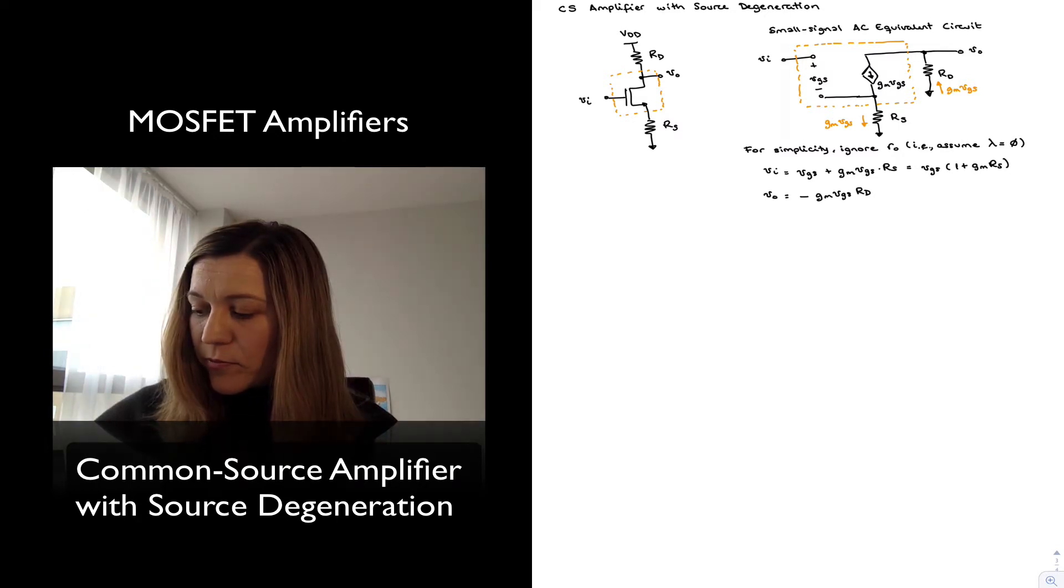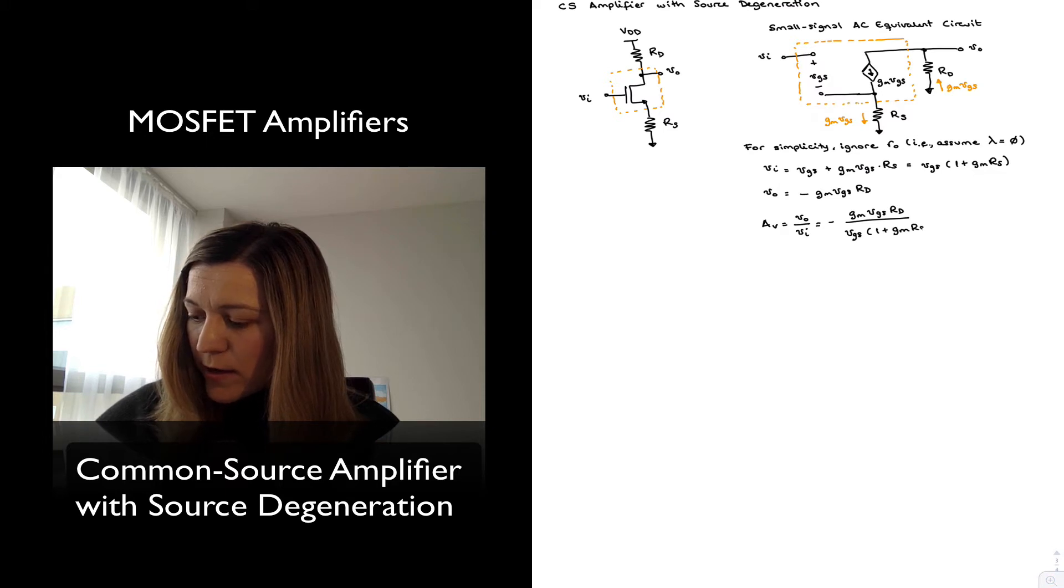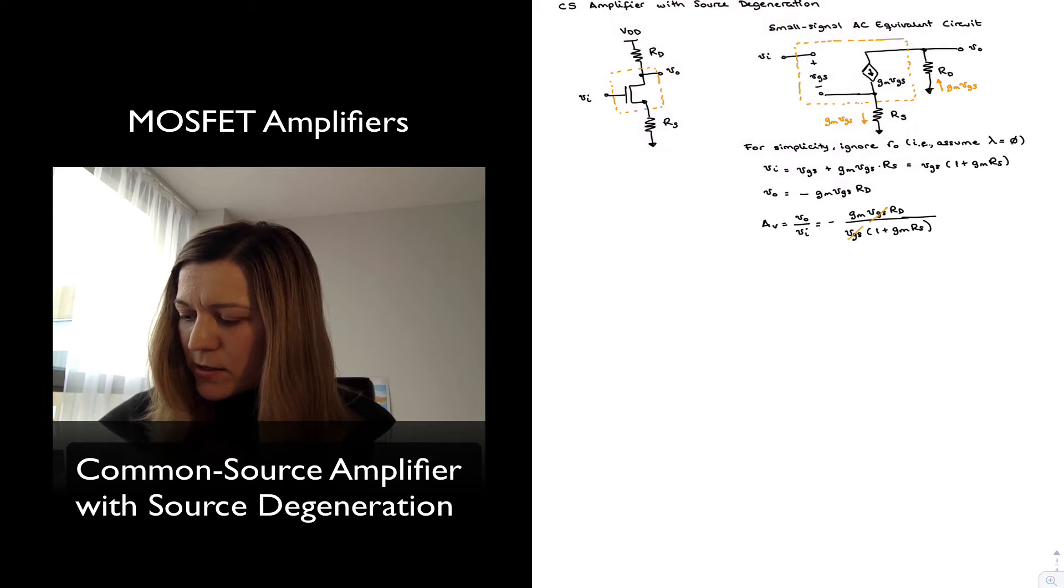And so my voltage gain, which is by definition output voltage over input voltage, is going to be equal to negative GM VGS RD divided by VGS times 1 plus GM RS. The VGSs can be factored out and canceled, and this gives me minus GM RD divided by 1 plus GM RS.